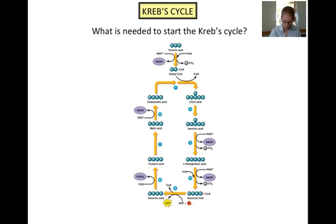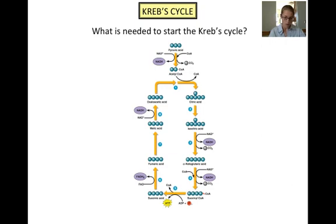But in order to start the Krebs cycle, which generates the high-energy electron carrier molecules for the electron transport chain in addition to a small amount of ATP, we need pyruvic acid, or pyruvate, which can be seen at the top of the diagram as the starting point of the cycle. Before we move on, pause this video and watch the Krebs cycle animation that is on the portal.